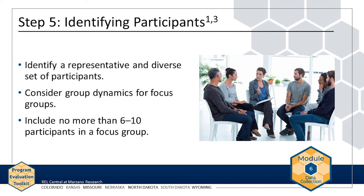When assembling focus groups, also consider group dynamics. For example, students may not provide much information about barriers to completing homework if teachers or parents are present in the room. Sometimes determining focus group participants is as simple as putting together groups of students, parents, teachers, and so on. Depending on the questions you ask or the program you are evaluating, you may organize groups by different factors, such as socioeconomic status, grade level, role, or locale. Focus groups typically include 6 to 10 participants, so that the participants or facilitators do not feel overwhelmed. Review Module 4 on sampling for more in-depth information about selecting participants for data collection.